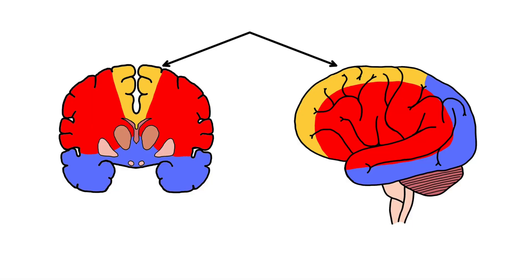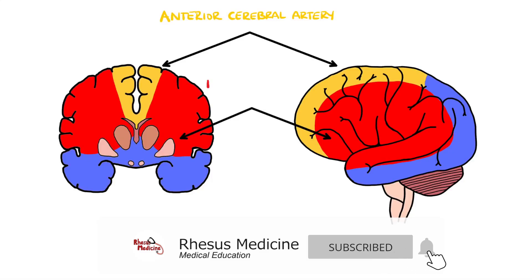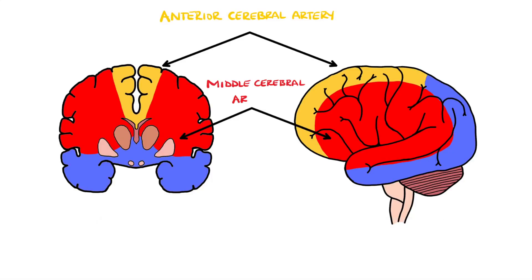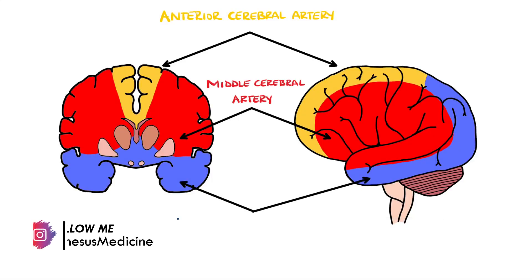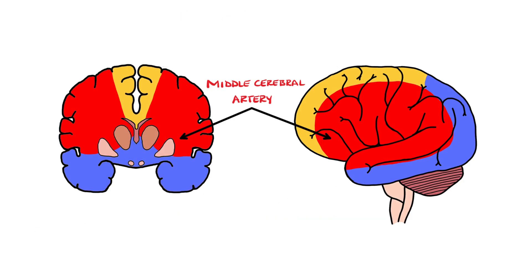Stroke syndromes are collections of signs and symptoms resulting from strokes in different regions of the brain or central nervous system. In this video we will cover the stroke syndromes associated with strokes in the territory of the middle cerebral artery.